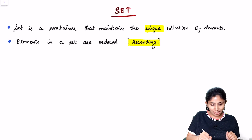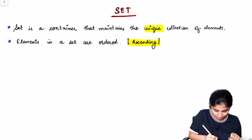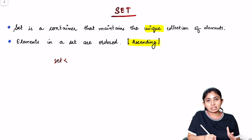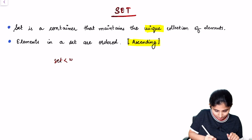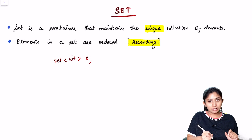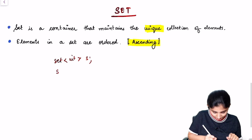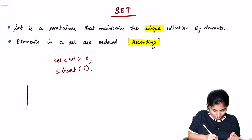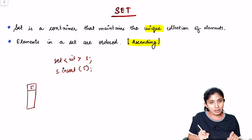Let's see how we can initialize a set in our STL. We write 'set', then the data type of the elements we want to store — it can be integer, character, float, double, or any other custom data type. Say 'int', then our identifier for the set, and we can write 's.insert()' with the element we want to insert, say 5. This will create a set and insert 5 into it.